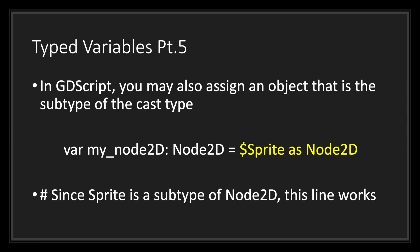In GDScript you may also assign an object that is the subtype of the cast type. This is an advanced topic, as we have not covered Godot-specific classes — if you want to learn about those, please feel free to view my Godot basics tutorial series. As an example, we have a variable called my_node_2d with the data type of Node2D, a Godot-specific class, and we are assigning it a Sprite class value cast as a Node2D. The Sprite class is a subclass of the Node2D class.